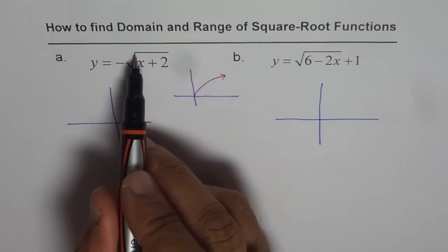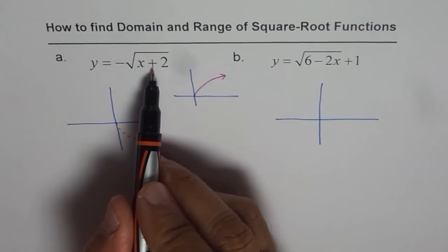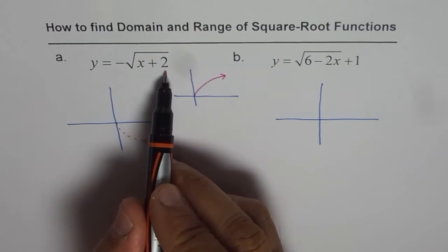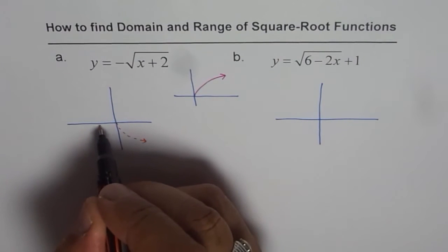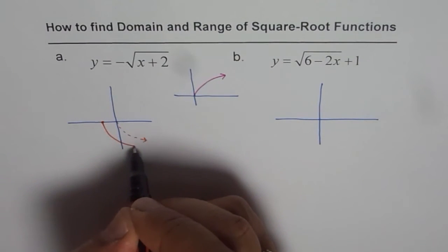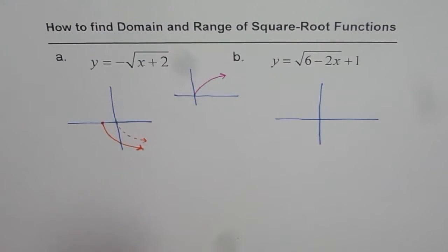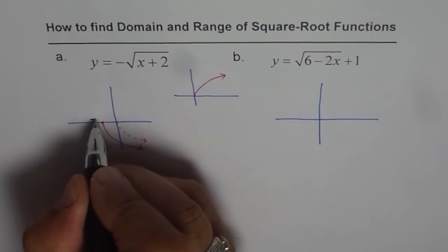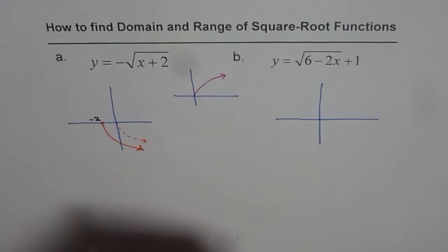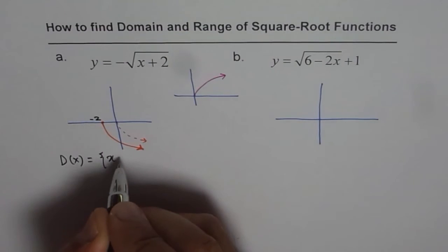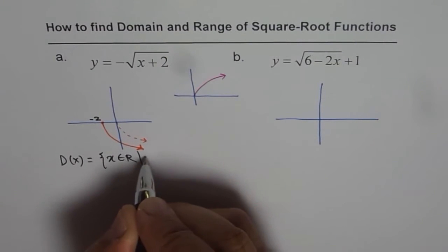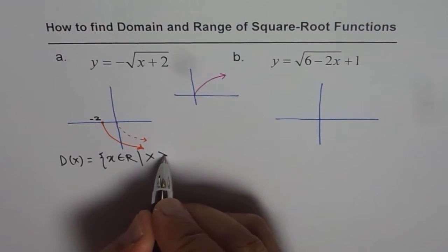Now x plus 2 within the square root translates function 2 units to left. So it has translated 2 units to left and we get a function kind of like this. Once you sketch this, things are absolutely clear. So this is minus 2. Now you can write that the domain for the function is x belongs to real numbers where x is greater than equal to minus 2.